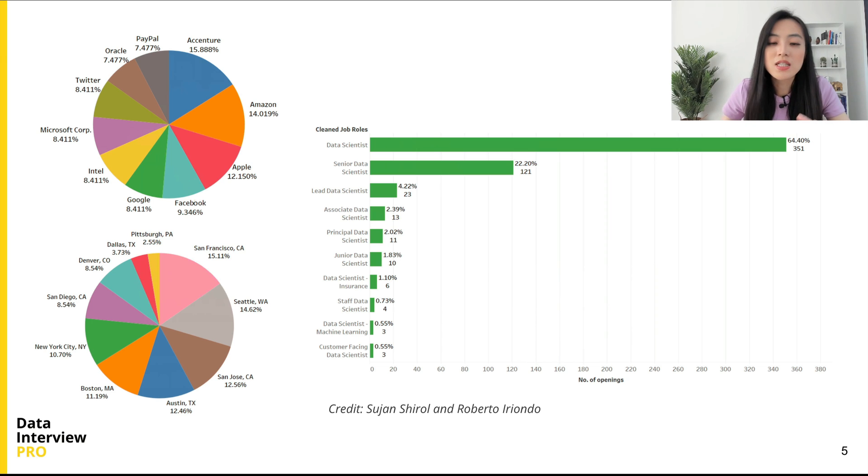They look at things such as top companies in the US actively recruiting data scientists, top locations hiring data scientists in the US, and the trend of positions within different groups of experience level. All of them are helpful for job seekers to understand the job market. There might be a little hard for you to see them clearly on the slide, but I have the link to the article in the video description. Feel free to check it out.